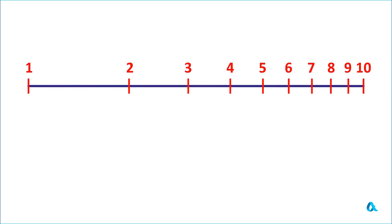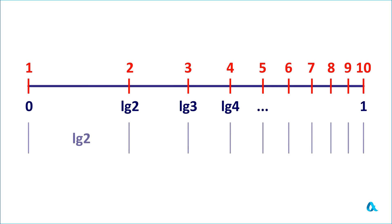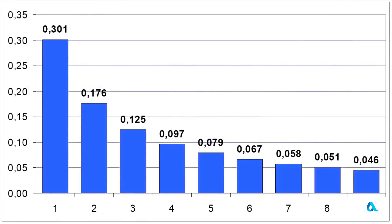Let's write the decimal logarithms under the numbers. The logarithm of 1 is 0, and the logarithm of 10 is 1. The length of the first segment is the logarithm of 2. The length of the second segment is the logarithm of 3 minus the logarithm of 2 — that is, the logarithm of 3/2. The length of the next segment is the logarithm of 4/3, and so on. Now the logarithms have been calculated, we see the familiar distribution of first digits, and it seems like the problem is solved.